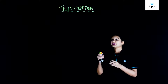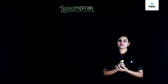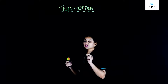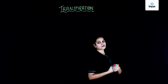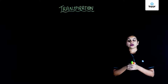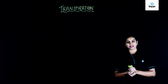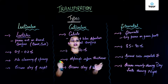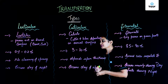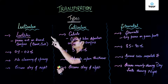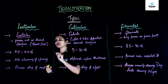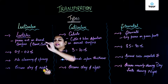Moving forward, when we talk about the types of transpiration, we see that transpiration can be of different types depending upon the part from which the water has been lost. Let's have a look at the different types on the basis of from which part transpiration is taking place. The first type is lenticular transpiration.